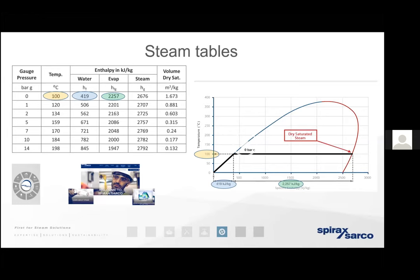But we don't want boiling water — we want steam. We want that one kilogram of water to fully evaporate. In order for that to happen, we need to add a further 2,257 kilojoules of energy to that boiling water for it to evaporate. We refer to that as the enthalpy of evaporation, also called latent heat. So when that pan has boiled dry, that kilogram of water has changed state to a kilogram of steam.